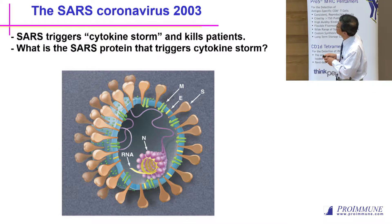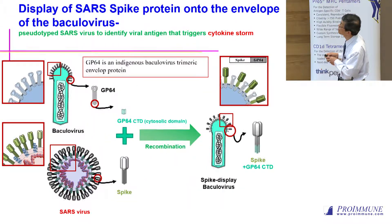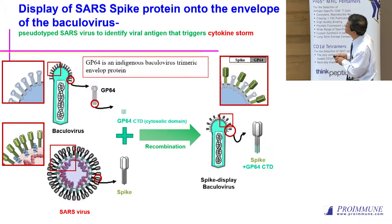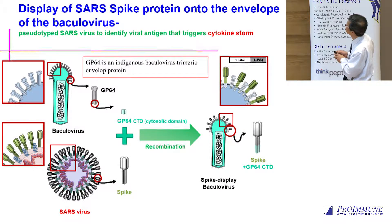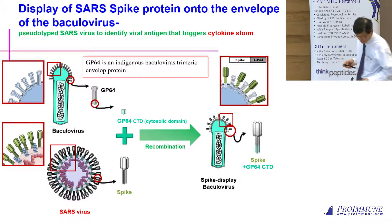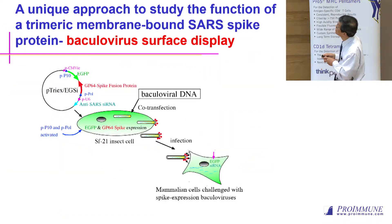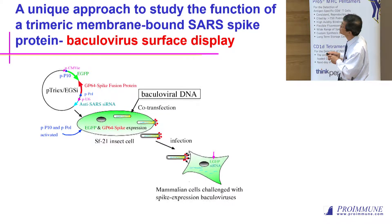The way we did it: baculovirus has a membrane protein called GP64, which is a trimeric protein. We found that if we collect the cytosolic domain — the domain under the envelope — and engineer it to the base of the spike, which is the C-terminal of spike, this will allow spike from the SARS virus to anchor on the envelope of baculovirus. This way, we can use insect cells by making a genetically engineered baculovirus. The virus enters the cell, and at the surface of the cell, it is decorated with spike protein — proven to be trimeric envelope proteins.